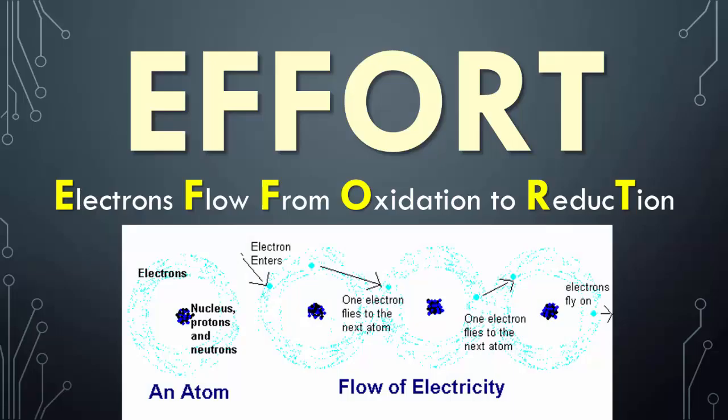So how do electrons actually move? Every time you have an atom with an electron cloud, another electron elsewhere flies in and keeps bouncing from electron cloud to electron cloud, which we simply call the flow of electricity.